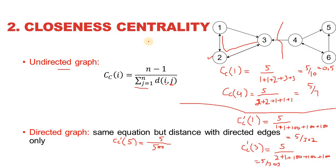This is how we calculate closeness centrality for any node in a directed or undirected graph. A shortcoming is that when no path exists from one node to another, we must use an artificially high value (here, 100) as a workaround. However, a key strength of closeness centrality over degree-based centrality is that it considers not just direct neighbors but also neighbors of neighbors and beyond, giving a better overall measure.